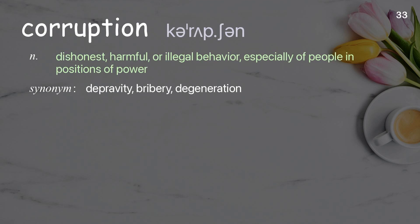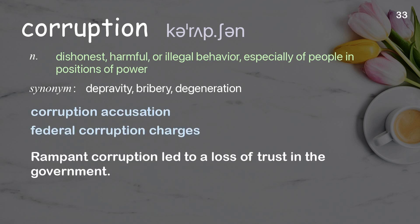Corruption. Dishonest, harmful, or illegal behavior, especially of people in positions of power. Examples: corruption accusation, federal corruption charges. Rampant corruption led to a loss of trust in the government.